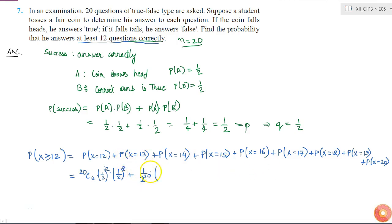Plus 1 by 2 power 20—I am taking it common for all the other terms—it will be 20 C 13 plus 20 C 14 plus 20 C 15 plus 20 C 16 plus 20 C 17 plus 20 C 18 plus 20 C 19 plus 20 C 20.